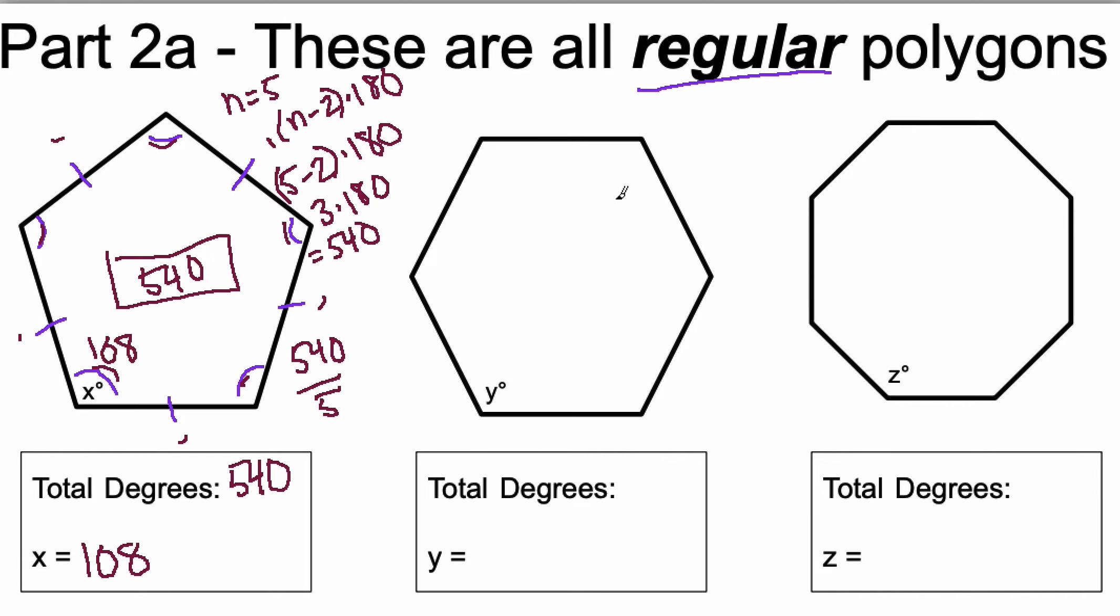Let's go to the next one. Here we have a regular hexagon. So there's 1, 2, 3, 4, 5, 6 sides so n is equal to 6. So n minus 2 times 180. I'll do 6 minus 2 times 180 and I'm going to get 4 times 180. That's equal to 720.